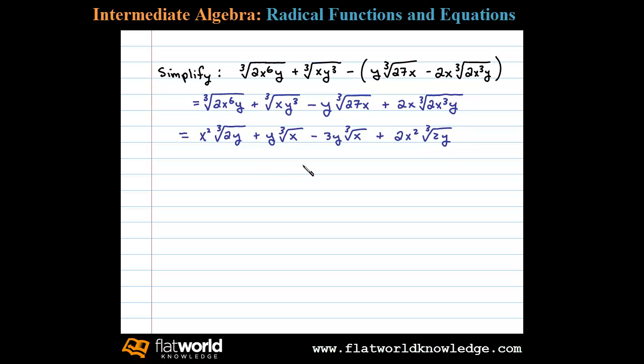Now at this point we will combine like terms. Like terms are terms with the same exact variable part. So here I see x squared times the cubed root of 2y plus 2 times x squared times the cubed root of 2y. These are like terms and that leaves us...